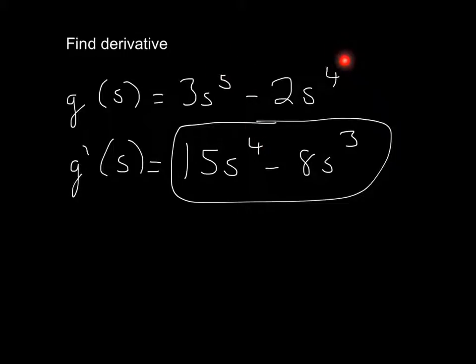Here, all I did was bring down the 4, so it's going to be 4 times 2 is 8, and then 4 minus 1 is 3. So that is your final answer.